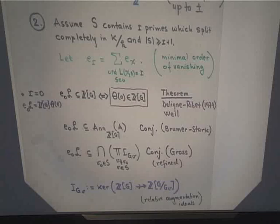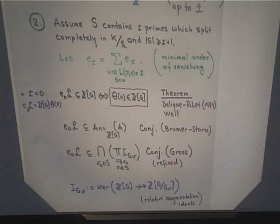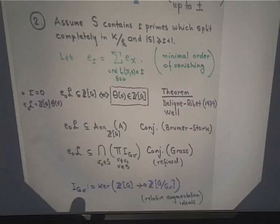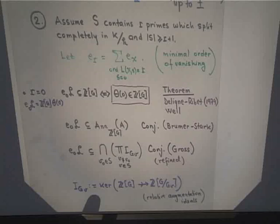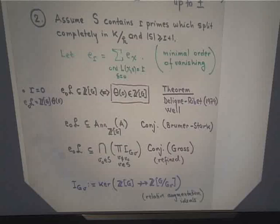There are refinements of the Deligne-Ribet theorem which are conjectural. The Brumer-Stark conjecture says that θ(0) belongs to the annihilator of the ideal class group — that's a statement about the lattice, saying E_0 · L is inside the annihilator over Z[G] of A. There is a further refinement due to Gross: θ(0) is in an intersection of products of relative augmentation ideals associated to the various decomposition groups of primes v in S. That's again a statement about the E_0 piece of this lattice.